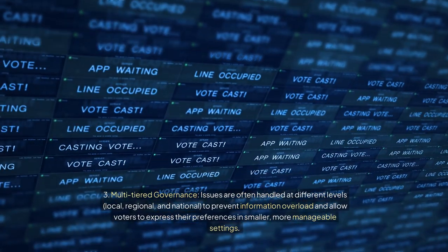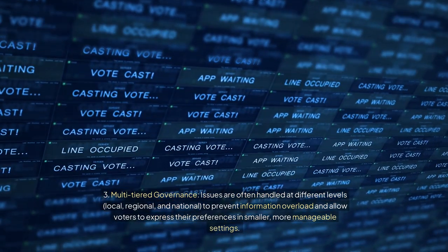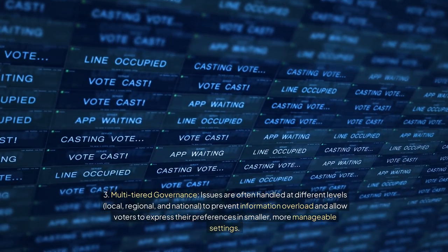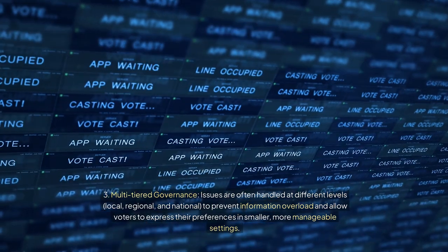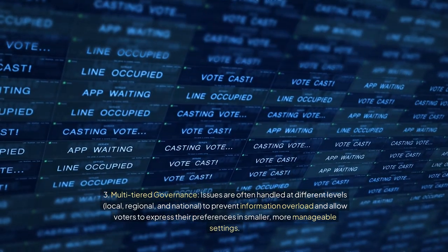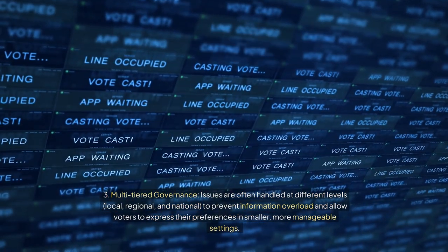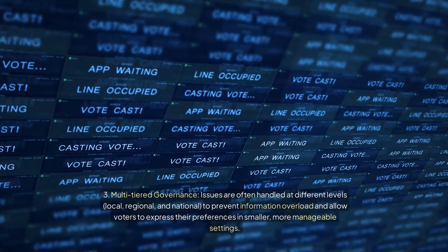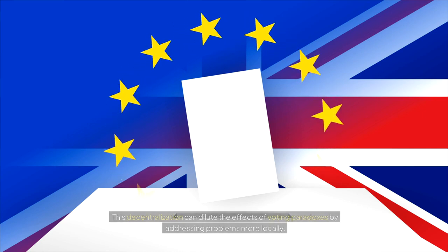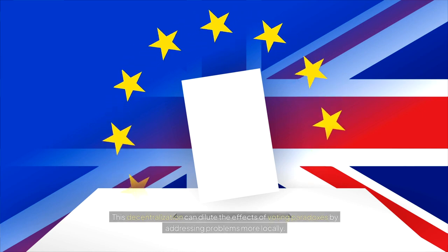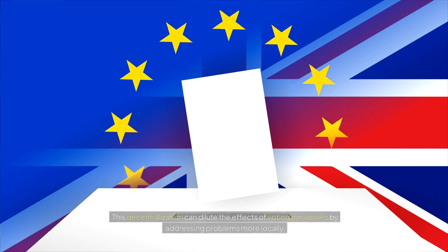Multi-tiered Governance. Issues are often handled at different levels — local, regional, and national — to prevent information overload and allow voters to express their preferences in smaller, more manageable settings. This decentralization can dilute the effects of voting paradoxes by addressing problems more locally.